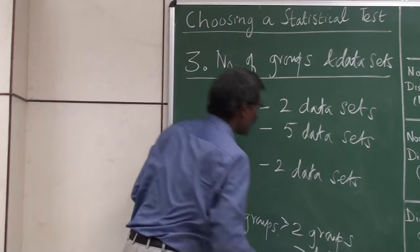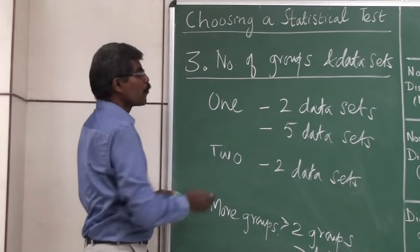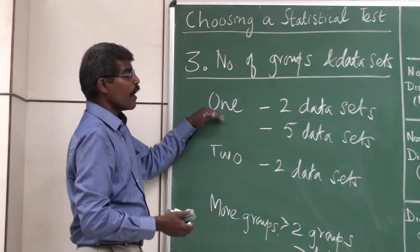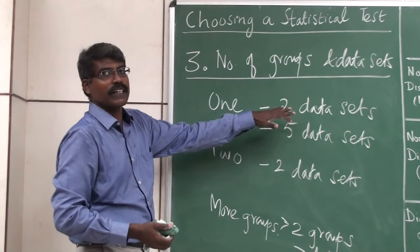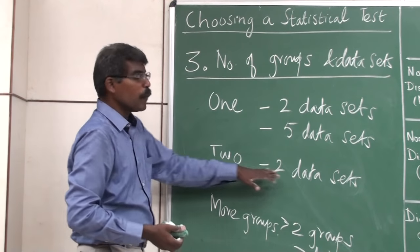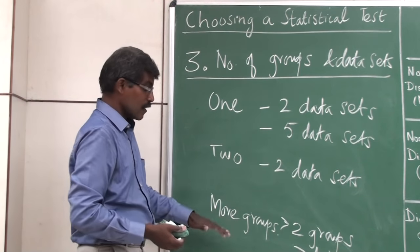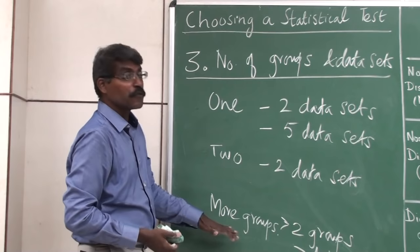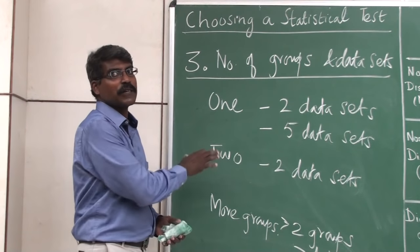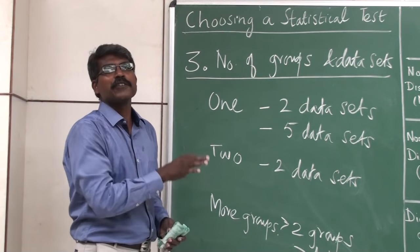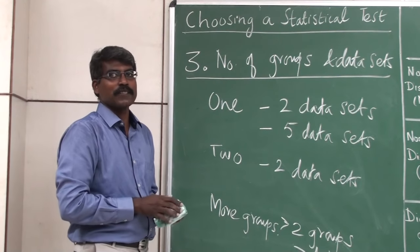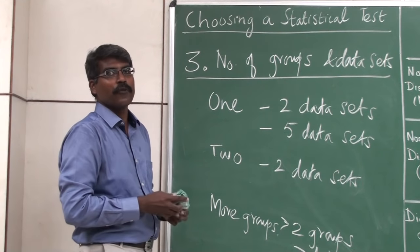So the third factor is the number of groups. You need to fix one of these options: one group with two data sets, one group with more than two data sets, two groups with two data sets, or more than two groups with more than two data sets.